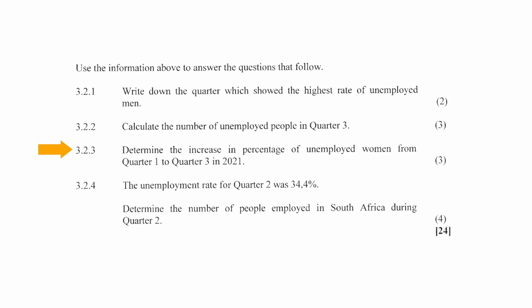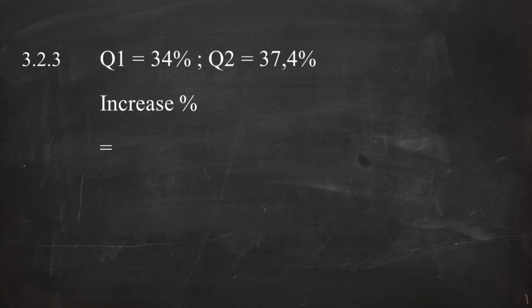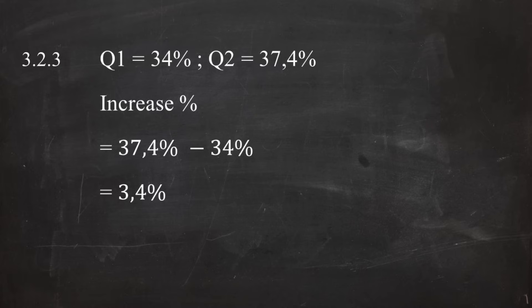In question 3.2.3, you have to determine the increase in percentage of unemployed women from quarter 1 to quarter 3 in 2021. From the graph, the unemployment rate of women in quarter 1 was 34%, while in quarter 3 it was 37.4%. The increase in the percentage of unemployed women from quarter 1 to quarter 3 is 37.4% minus 34%, which equals an increase of 3.4%.